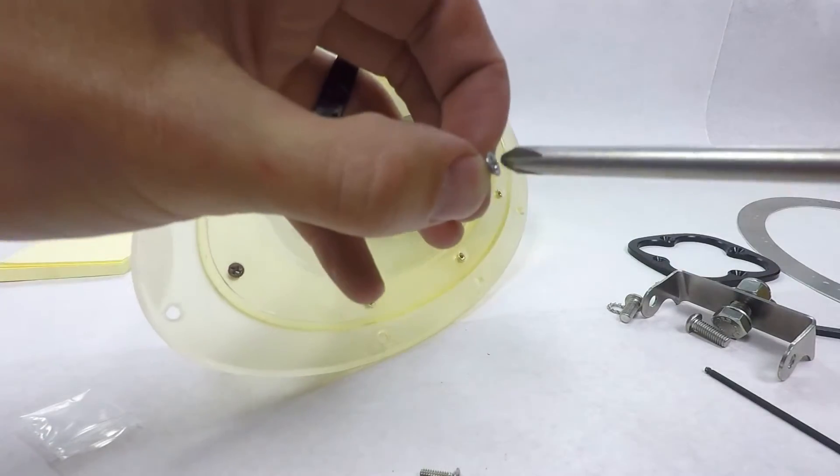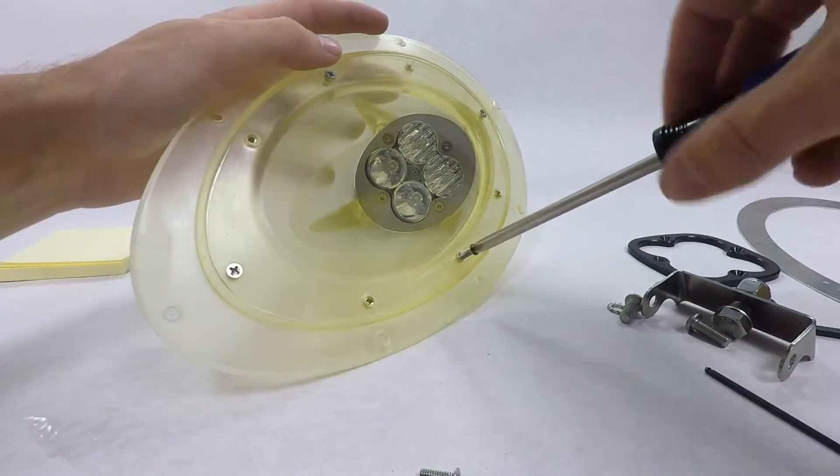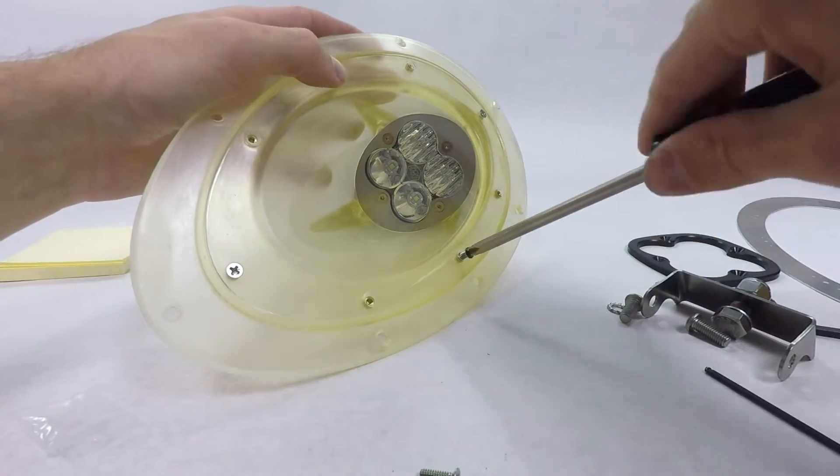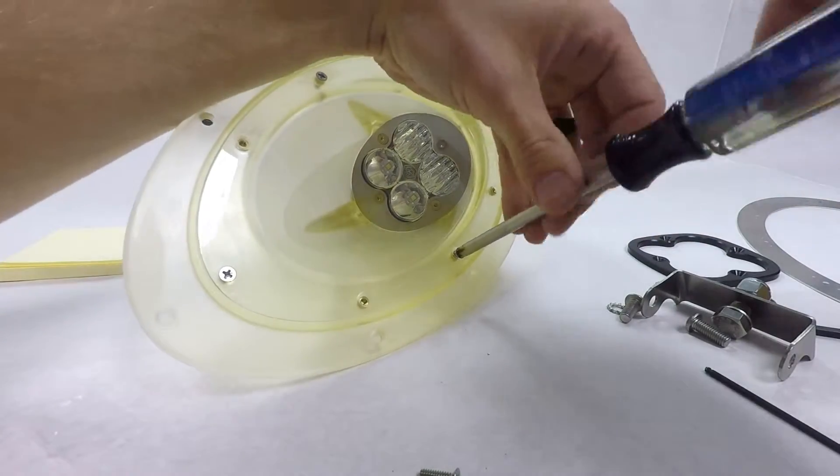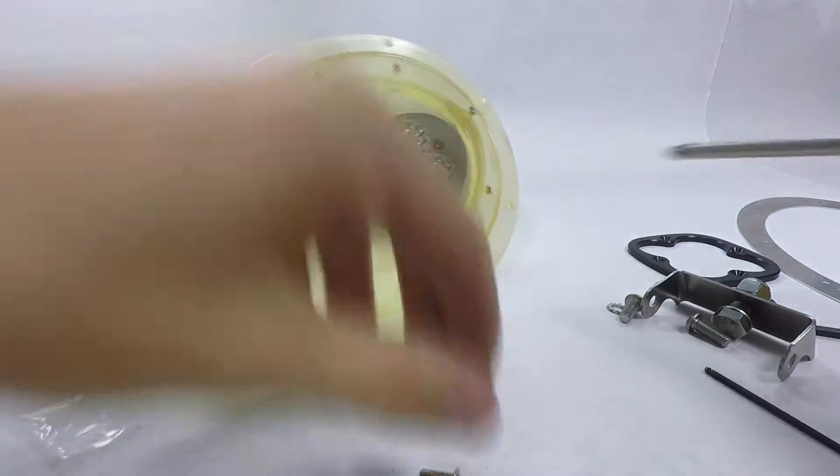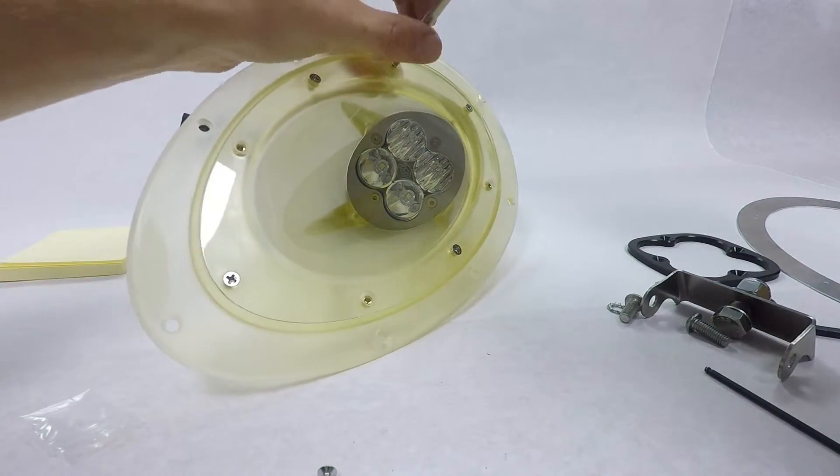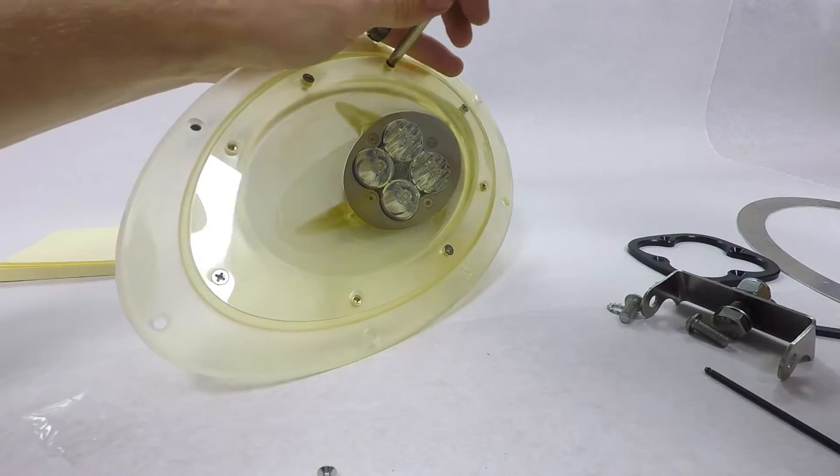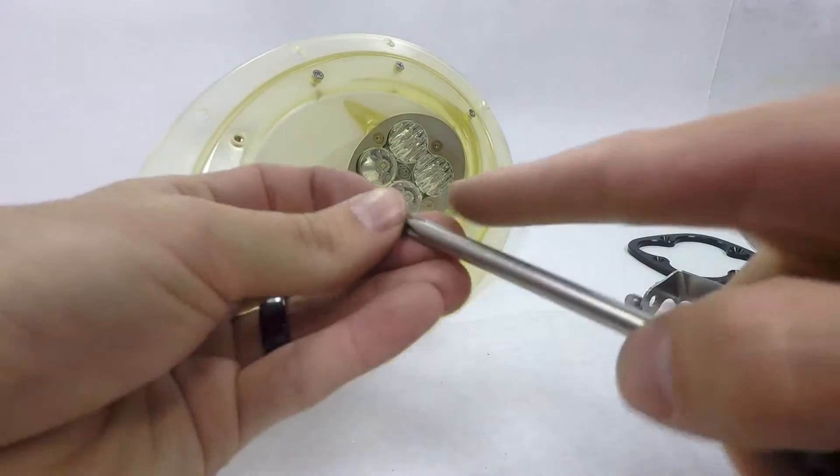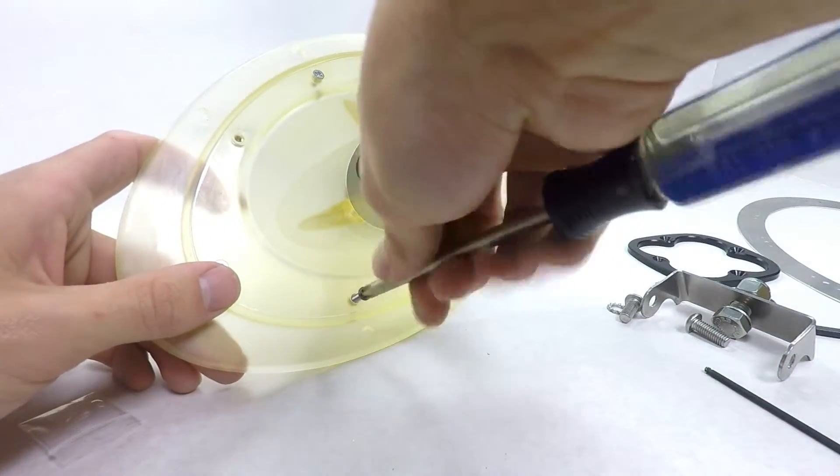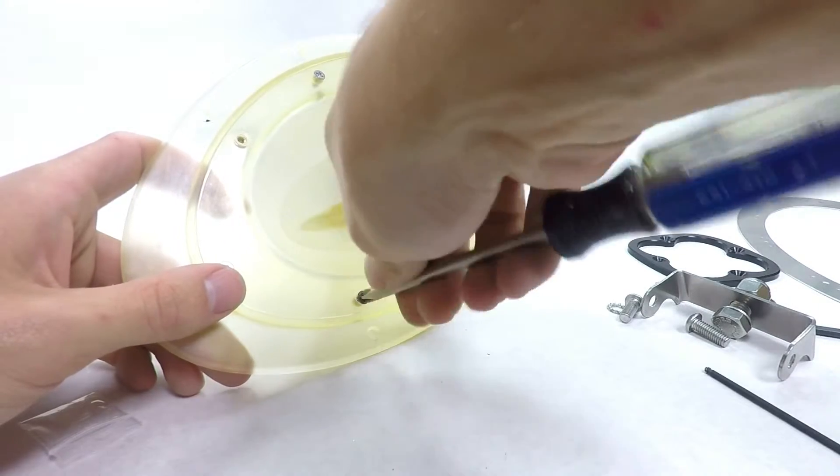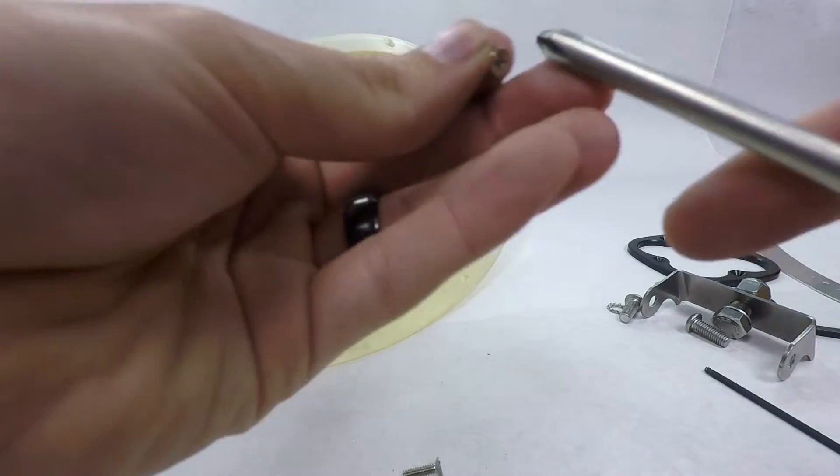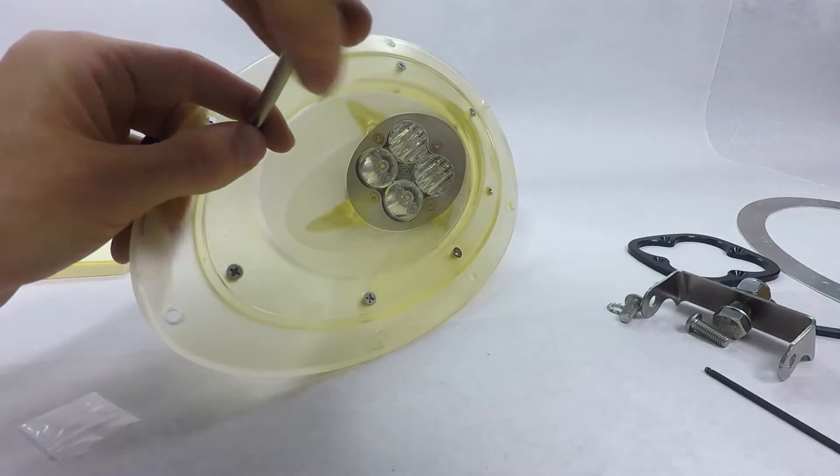Again, on these you don't really want to bear down too hard. You don't want to put any extra pressure on your lens that might cause it to crack. Just holding it in snug will be plenty of pressure here. Also, being careful you don't slip your screwdriver, like I almost did right there, and scratch your lens.